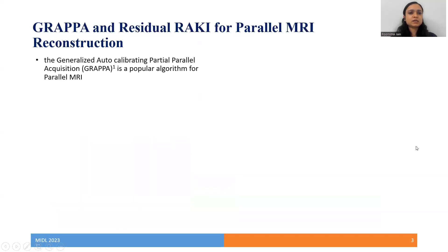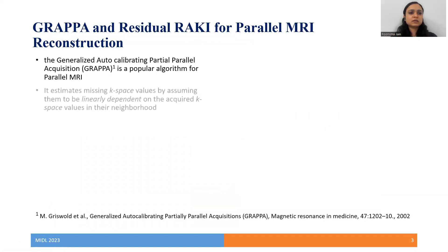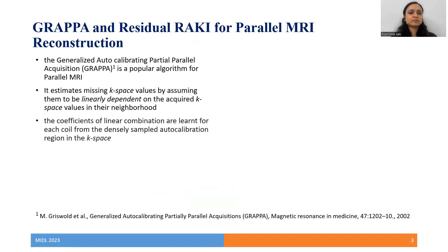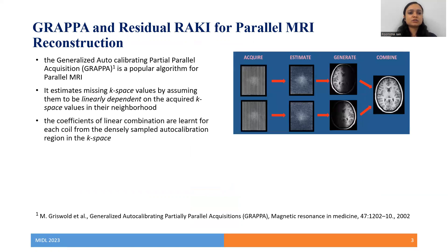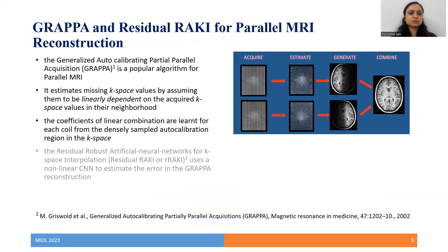GRAPPA is a popular algorithm for solving parallel MRI. It estimates missing k-space values by assuming them to be linearly dependent on the acquired k-space values in their neighborhood. The coefficients of linear combination are learned for each coil from a densely sampled auto-calibration region in the k-space, which consists of low-frequency components of the Fourier transform.